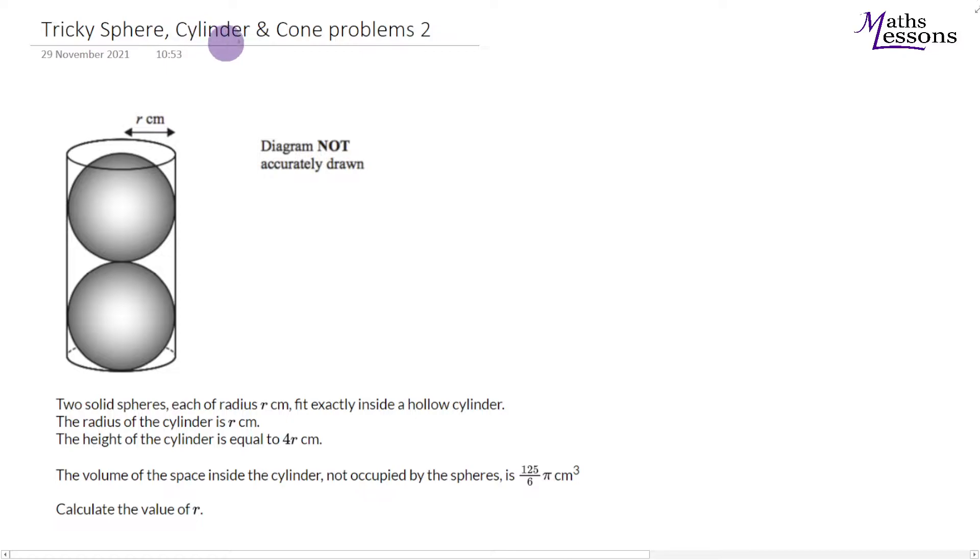Right, on our tricky sphere, cylinder and cone problem 2, we have a cylinder and sphere problem. We've got two solid spheres, each of radius r. So both of these have a radius of r, fit exactly inside a hollow cylinder.